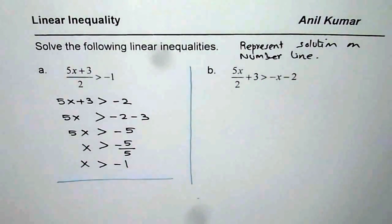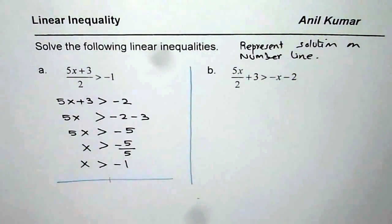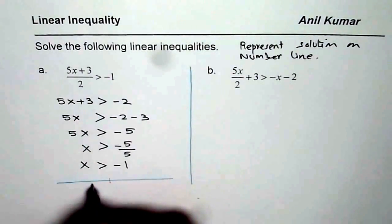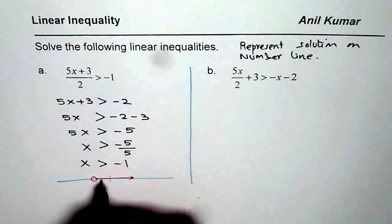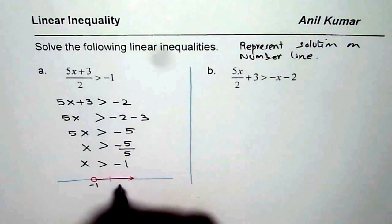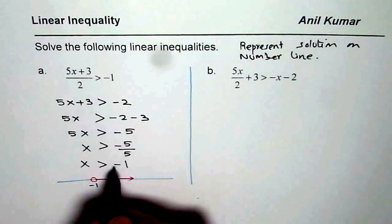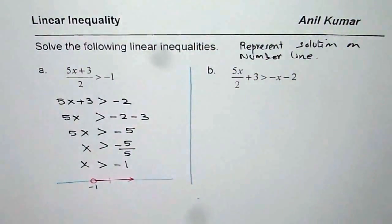So we have a number line here. On a number line, let us say this is 0 for us. The solution here is x is greater than minus 1. That means not including minus 1 but greater than. That represents the solution on a number line. So this is minus 1 for us. So everything greater than minus 1, right side of minus 1, is how you represent this solution.